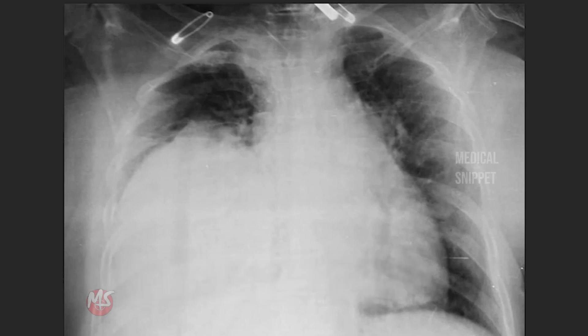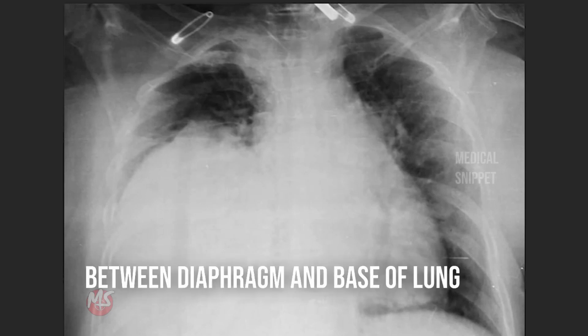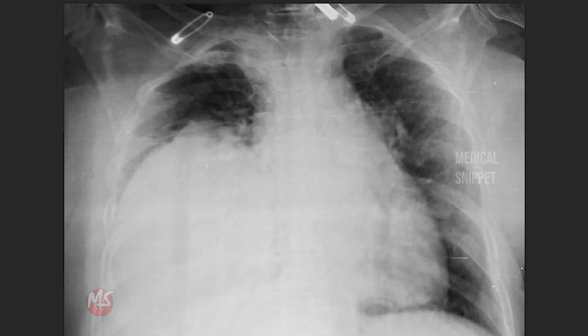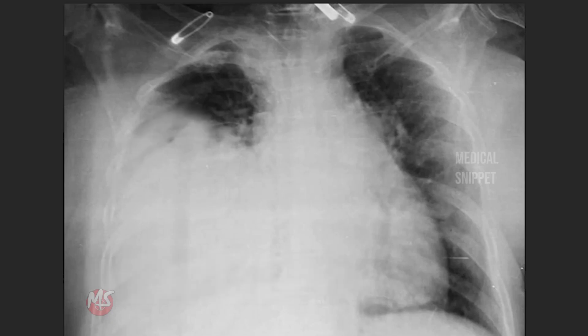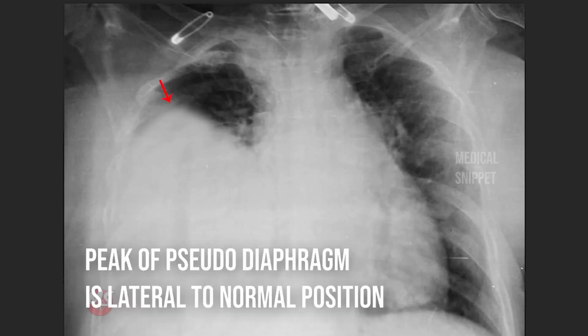Sub-pulmonic effusion is effusion between the diaphragm and the base of the lung. In this case, the peak of the pseudodiaphragm is lateral to the normal position. So this is also not sub-pulmonic effusion.